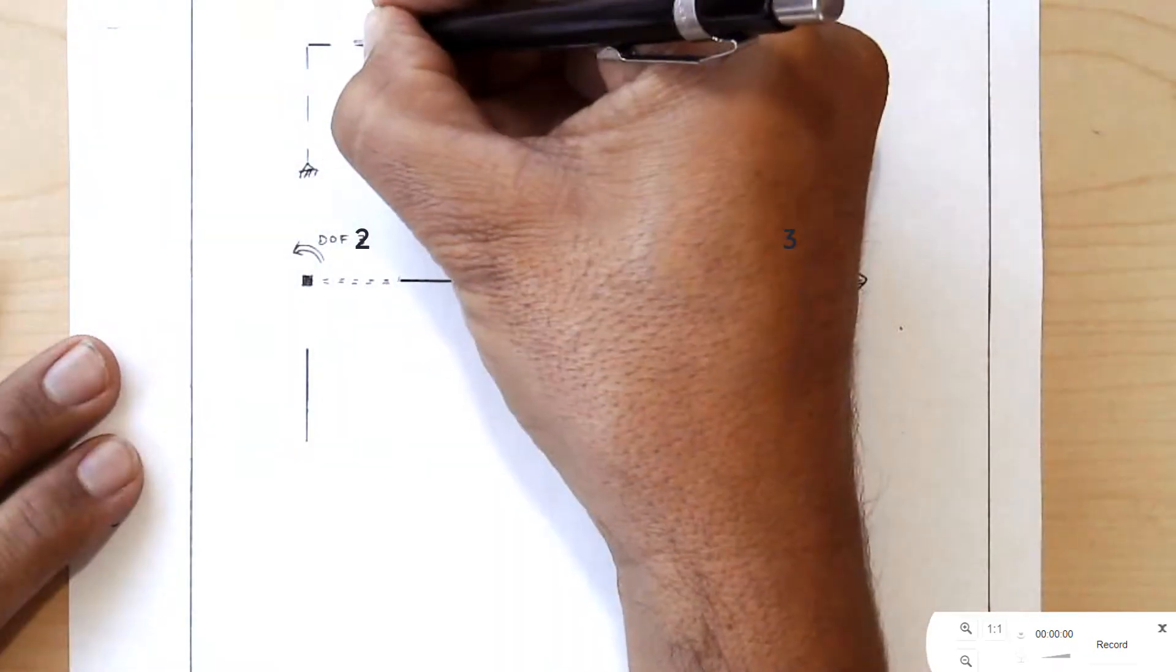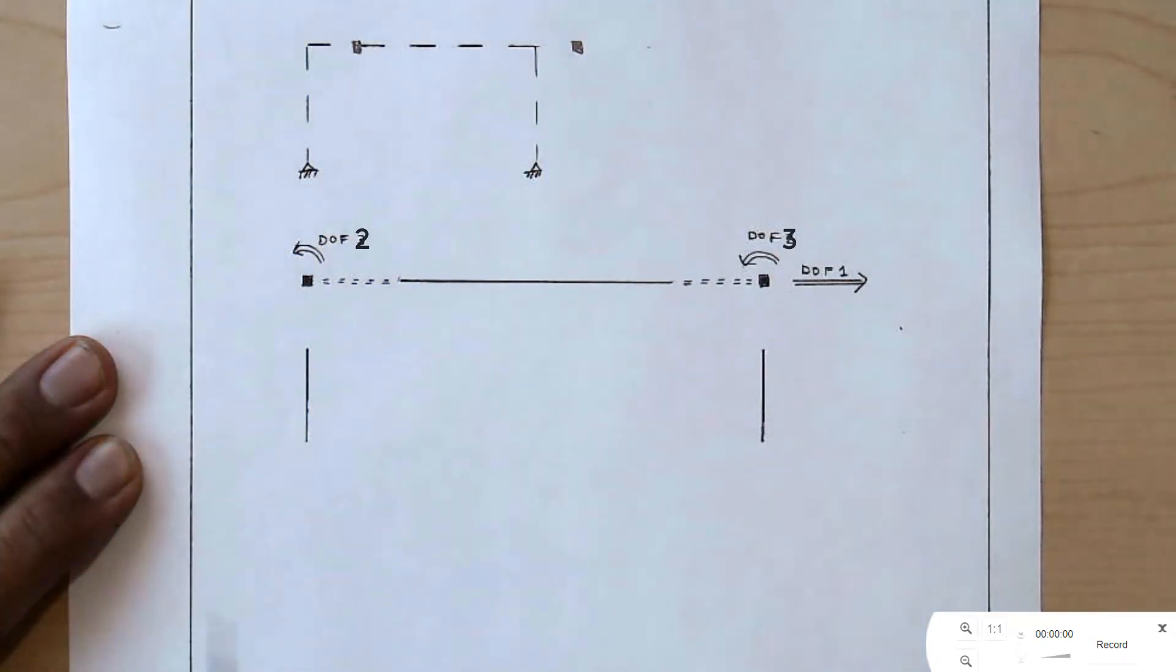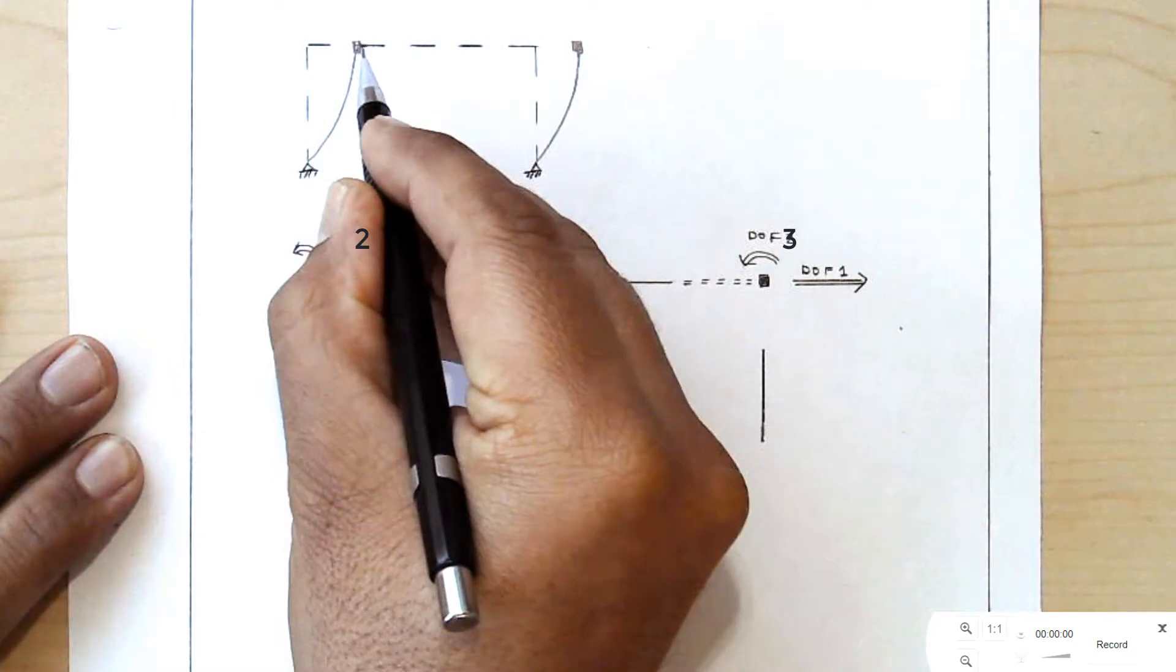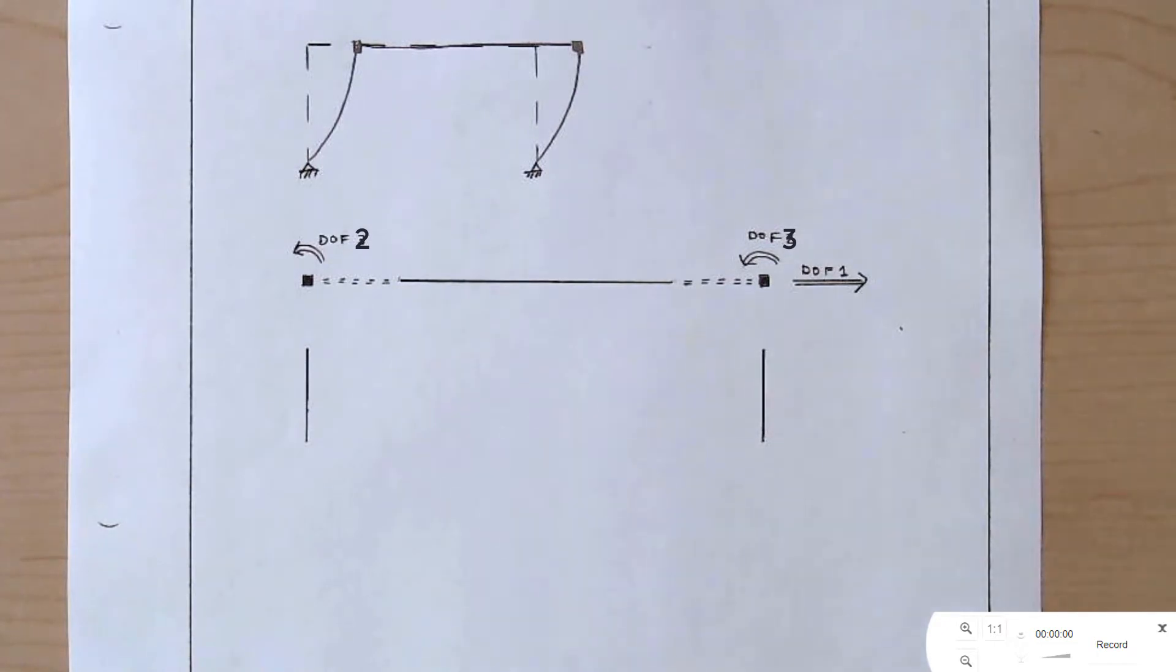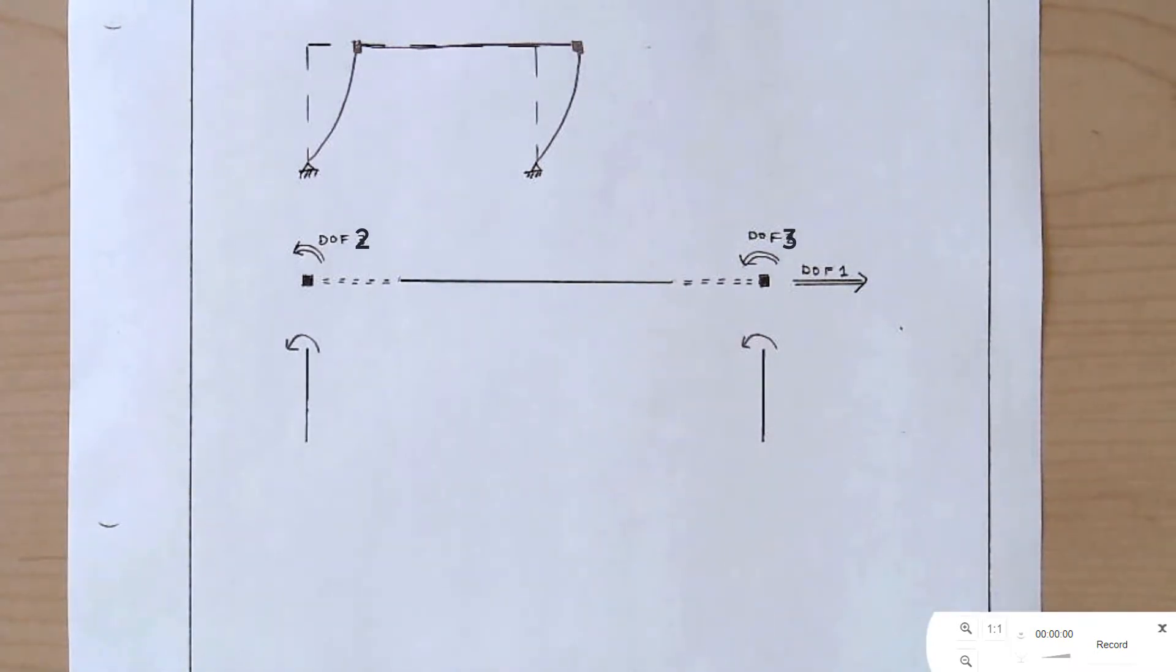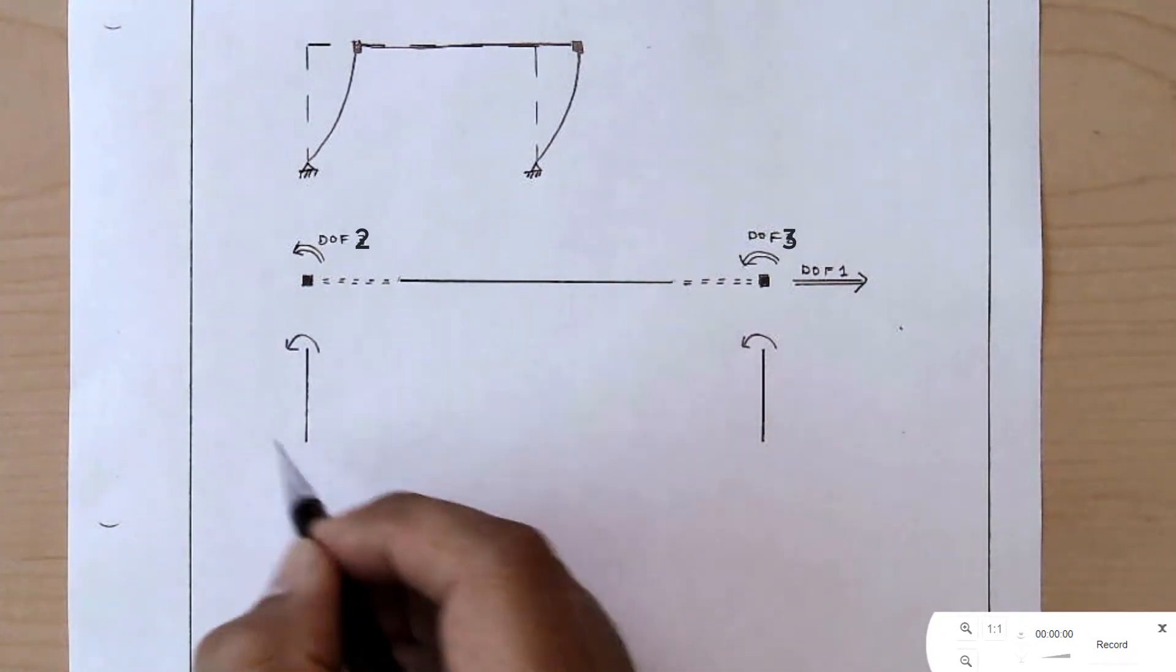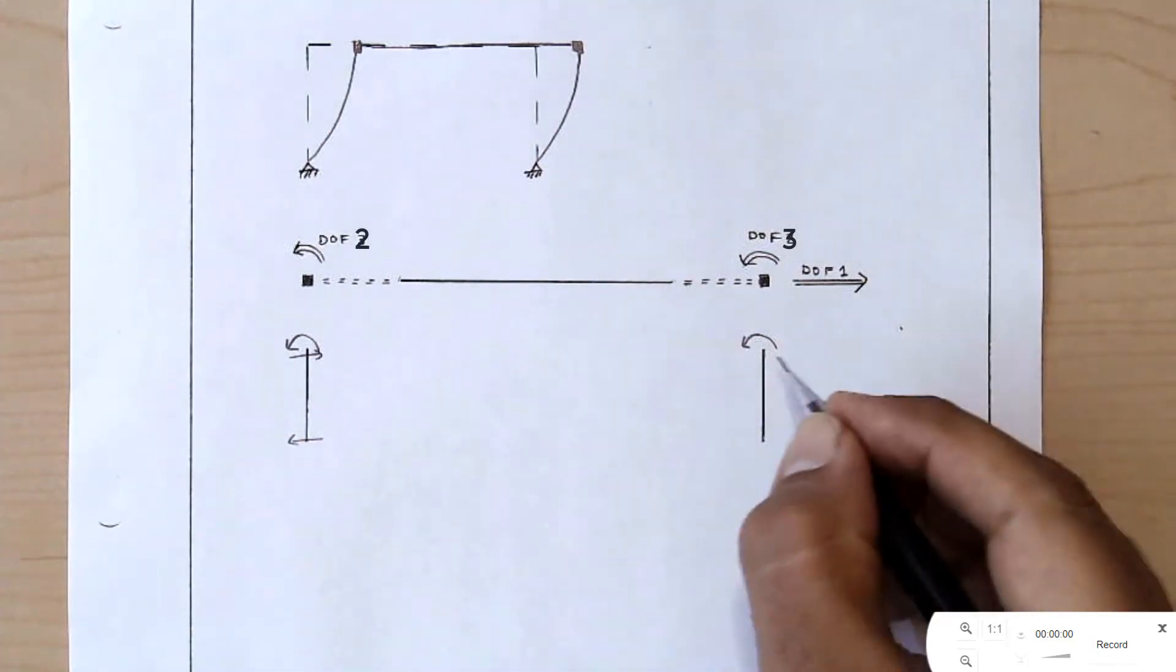First, we'll keep in mind our deformed shape. The deformed shape is a rightward translation with the nodes not rotating. This is the corresponding deformed shape. And this is my starting point for determining the member forces. On each of the columns, there must be a moment acting in this direction to impose the curvature that's shown on the column.